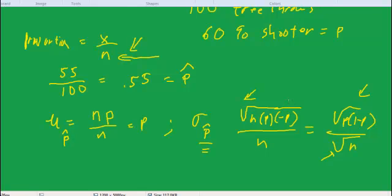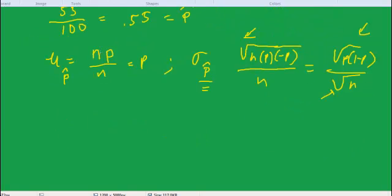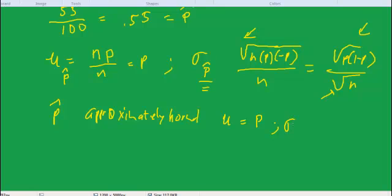And often, people will use what's called a normal approximation. That is, they'll say that p hat will be approximately normal with a mu equal to p and sigma equal to square root of p times 1 minus p all over square root of n. So people will use that.